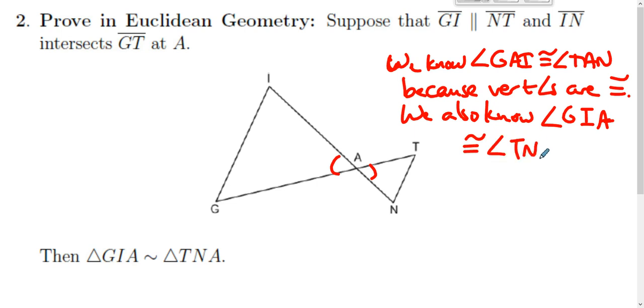We also know angle GIA is congruent to angle TNA by the converse of the alternate interior angles theorem. Why? GI and NT are parallel lines cut by a transversal. If we say that the alternate interior angles are congruent, that is the converse of the AIA.